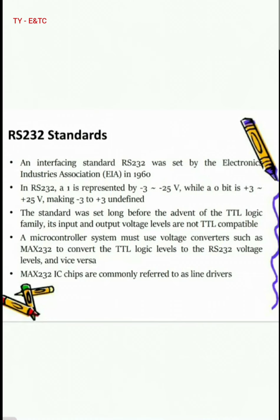A microcontroller is a digital device and can understand only 0 and 1 formats. The computer system operates at a different voltage level. So when you transfer the signal in a serial fashion, the voltage level of the signal is different — the microcontroller uses digital form while the computer uses RS-232 voltage levels.